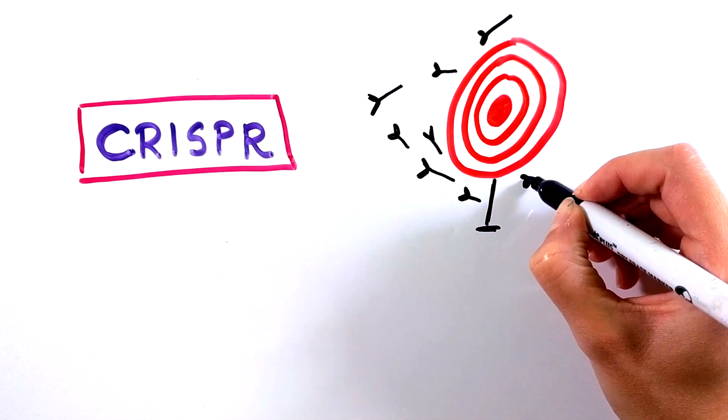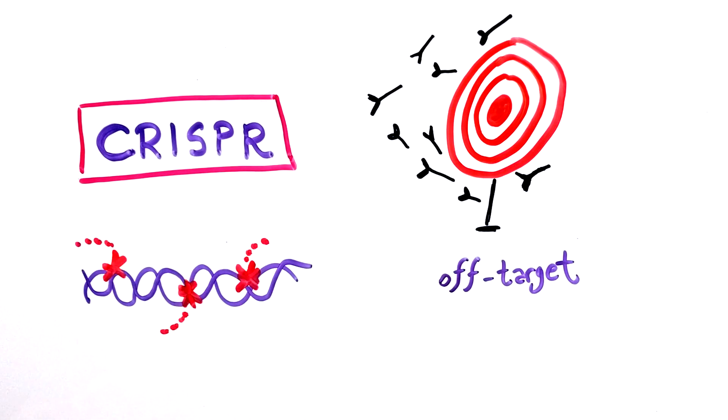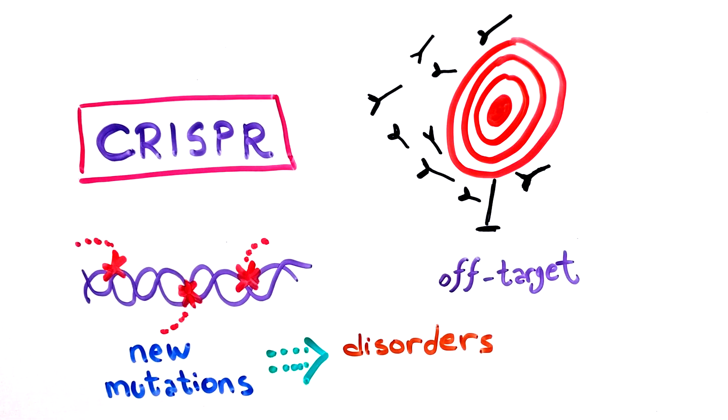Also, the CRISPR system is not that precise. It can create random mutations in the genome known as off-target defects, which can disrupt the function of genes and result in the development of brand new disorders.